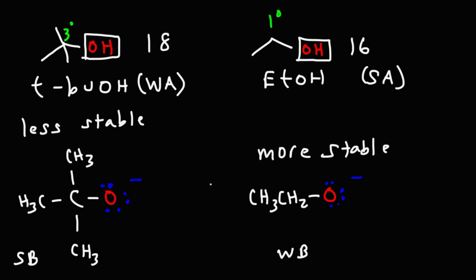Tert-butoxide is a bulky base. It's sterically hindered because of all the methyl groups attached to it. Ethoxide is not sterically hindered. Because ethoxide is not sterically hindered it's going to have more solvent interactions than tert-butoxide. So because tert-butoxide is sterically hindered it will have less solvent interactions.